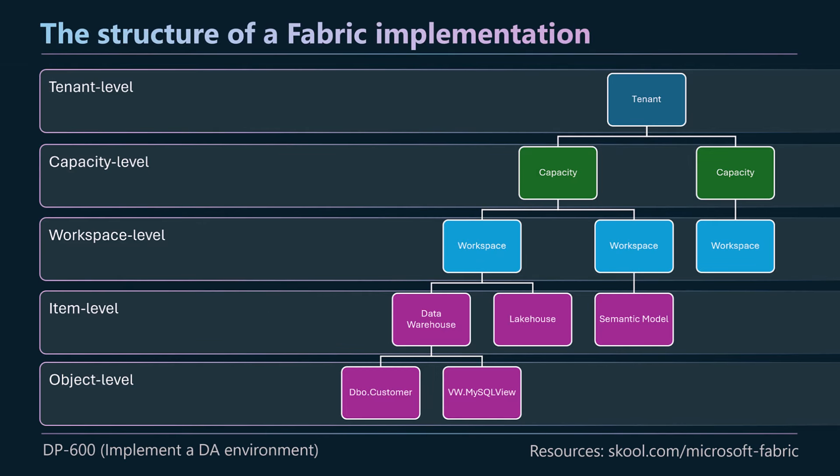This is a high level structure of a Fabric implementation. You'll notice it's hierarchical. At the top we have the tenant level — one tenant for your organization. Below that you might have one or many capacities. Then in each capacity, one or multiple workspaces. Within each workspace, we go down to the item level — for example, a data warehouse and a lake house. One level deeper than that is the object level, such as dbo.customer, a table or view in your data warehouse.